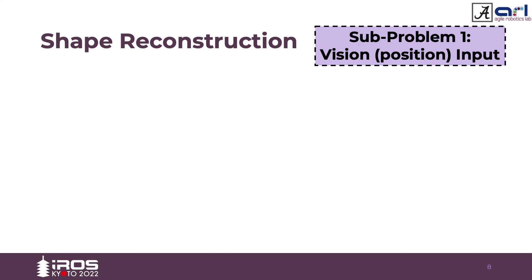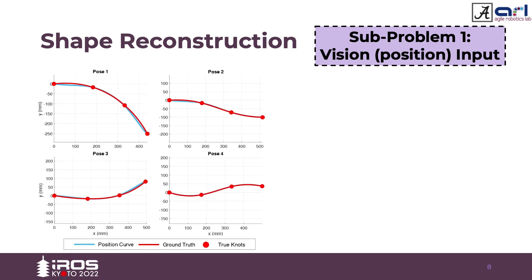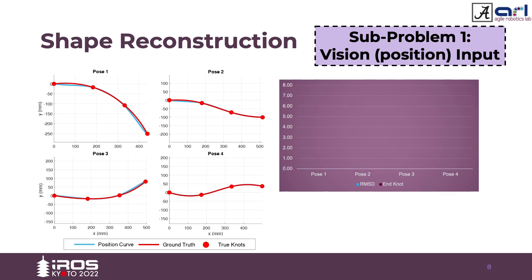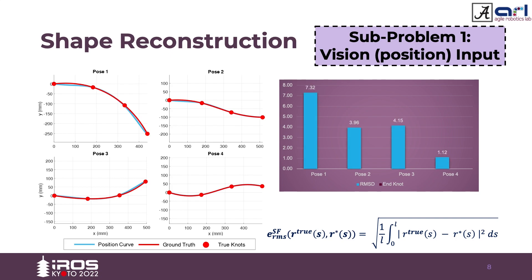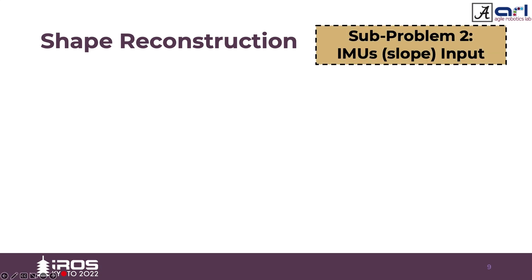For shape reconstruction using vision as input, the model is first tested for robustness to sensor noise. Since the markers were 6 mm by 3 mm, a random noise of plus or minus 3 mm is induced, and there is no major deviation observed. Using positional data, the reconstructed shapes are shown for all poses — the red curve represents the ground truth and the blue curve the estimated curve. Two error metrics were used: root mean square error, with a maximum of 7.32 mm, and Hausdorff distance, with a maximum of about 7 mm, both occurring at pose 1.